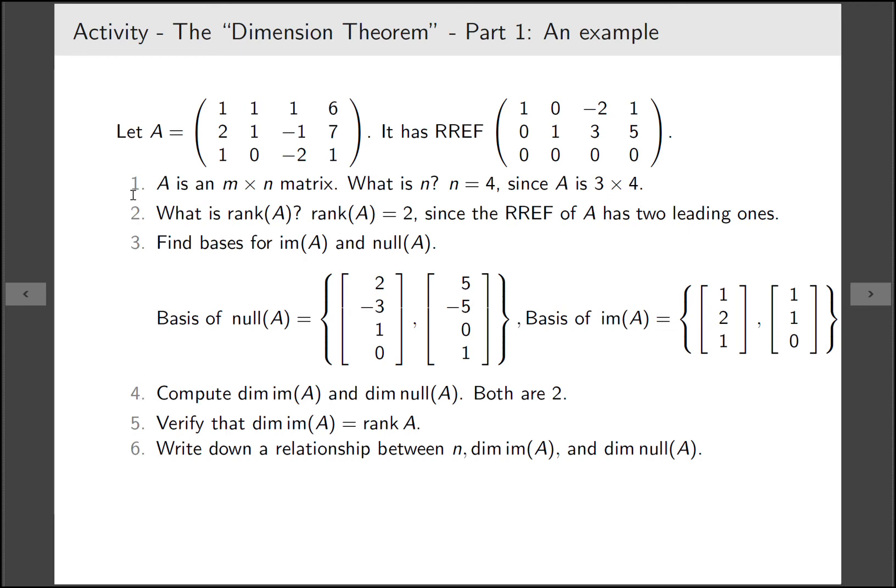So now I'm collecting all the information we already had and now we're ready to finish. Let's check that the dimension of the image of A and the rank of A are the same. Well the dimension of the image of A is 2 because there are two things here, and the rank is 2 since there were two leading ones.